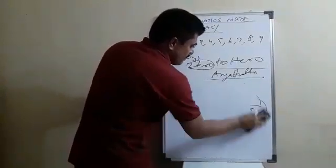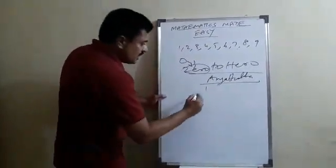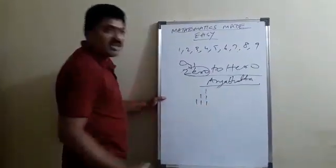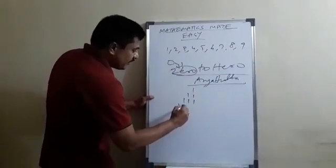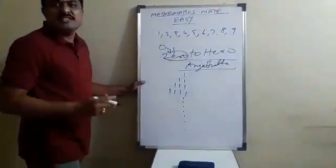we see, 1 digit number, 1, 2 digit number, 11, 3 digit number, 1, 1, 1, 4 digit number, 1, 1, 1, 1. Like this, we can keep on increasing the digits.